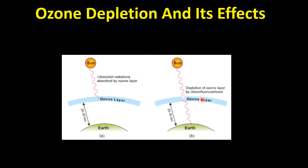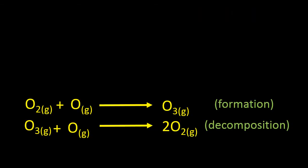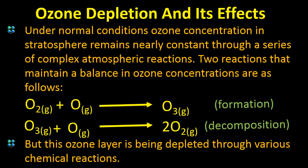But when the ozone layer has a hole in it, these ultraviolet rays of the sun reach directly to the Earth. This occurs due to the depletion of the ozone layer by chlorofluorocarbons. Under normal conditions, however, the ozone concentration remains balanced.